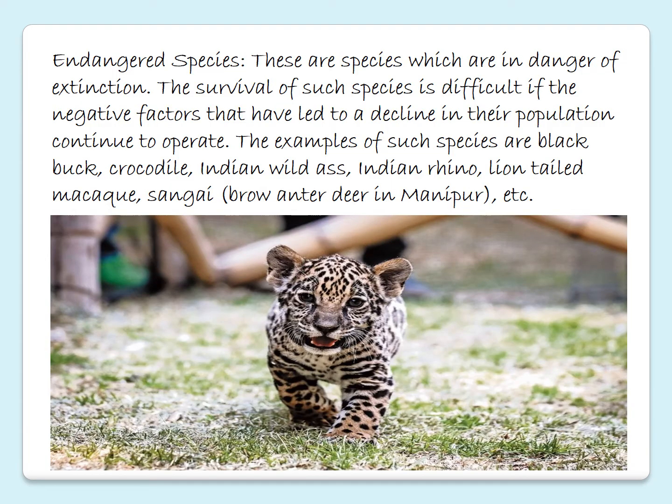Endangered species: these are the species which are in danger of extinction. The survival of such species is difficult if the negative factors that have led to a decline in their population continue to operate. Examples of such species are black buck, crocodile, Indian wild ass, Indian rhino, lion-tailed macaque, sangai, and the brow-antlered deer in Manipur, etc.